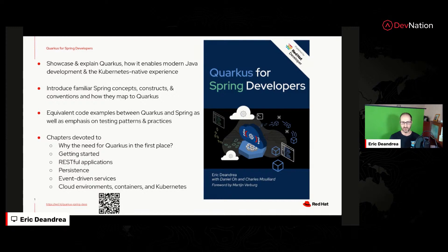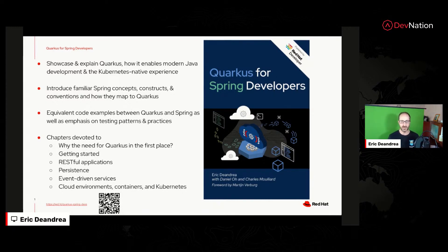They didn't just decide, hey, we need a new Java framework — there's a reason for it. So the book covers some historical aspects of what was going on, what the challenges were, and why we needed this. After that, we look at how do you get started? If I'm a Spring developer, I'm familiar with the initializer and all the starters. What does that look like in Quarkus? Then we take it into REST — looking at Spring MVC, Spring WebFlux, and how that translates into something in Quarkus.